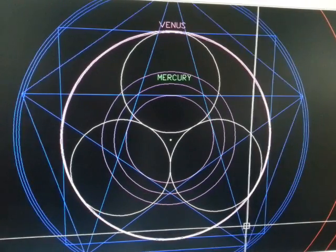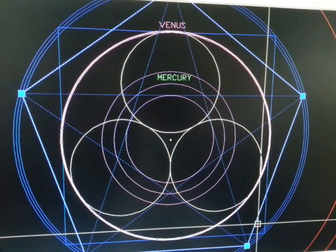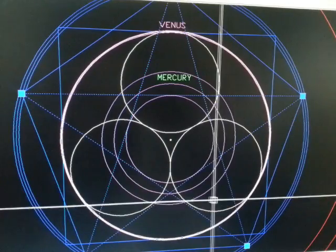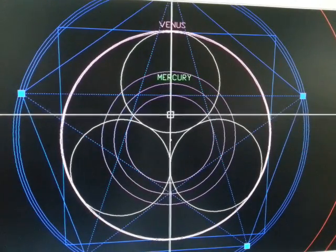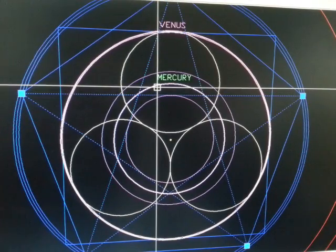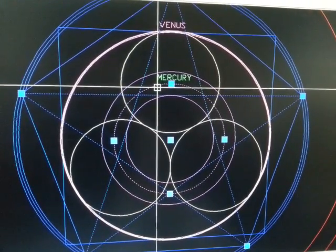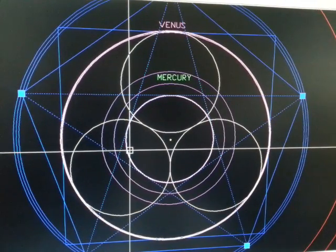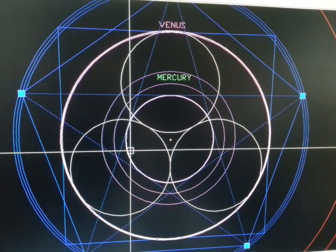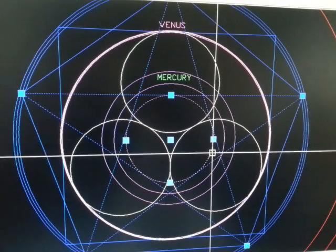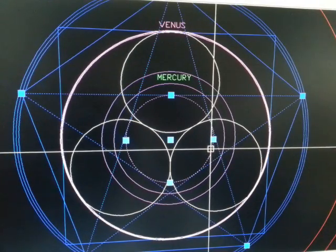If we take a pentagram and plot it inside Earth's mean orbit, then we'll have two things fitting here for Mercury. One, the crossing points is Mercury's mean orbit, and its periapsis, how close it goes to the Sun, that orbit fits within the pentagon, within the pentagram.